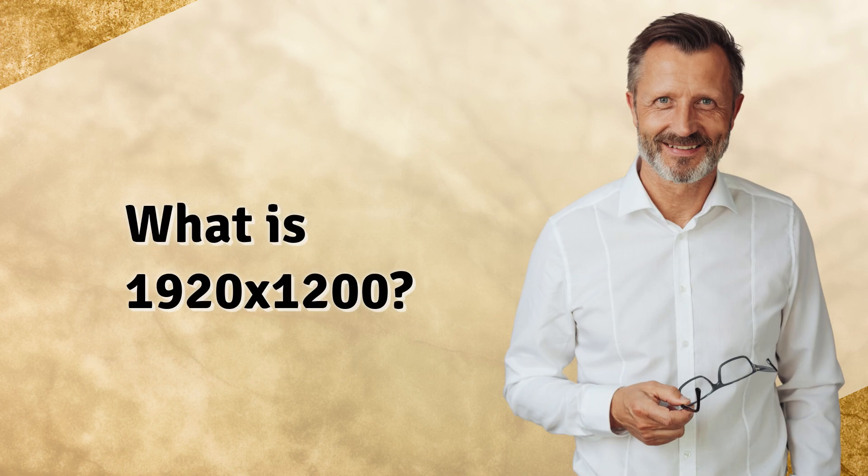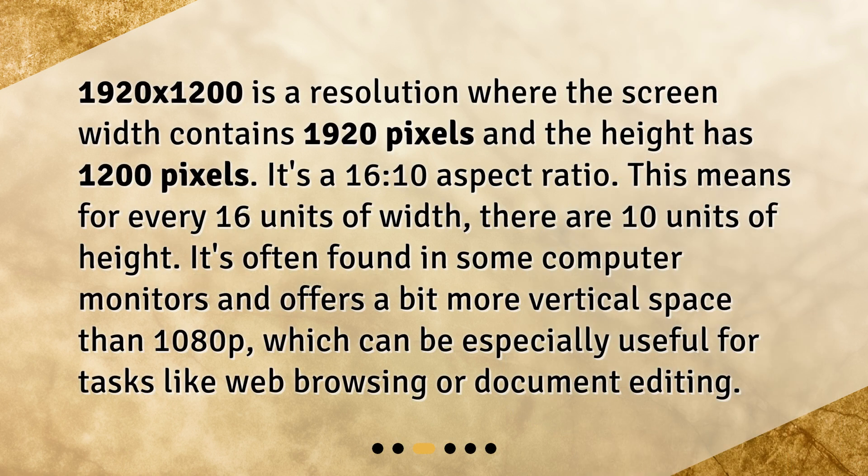What is 1920 by 1200? 1920 by 1200 is a resolution where the screen width contains 1920 pixels and the height has 1200 pixels. It's a 16:10 aspect ratio, meaning for every 16 units of width, there are 10 units of height. It's often found in some computer monitors and offers a bit more vertical space than 1080p, which can be especially useful for tasks like web browsing or document editing.